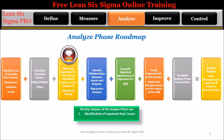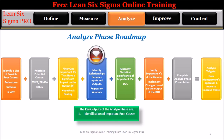Step 3: Filter out important X's (inputs) that have a direct and significant impact on the output, Y. Use hypothesis testing to isolate important factors. Step 4: Identify relationships between inputs and outputs — use regression analysis to look for relationships between the inputs, X's, and the output, Y.